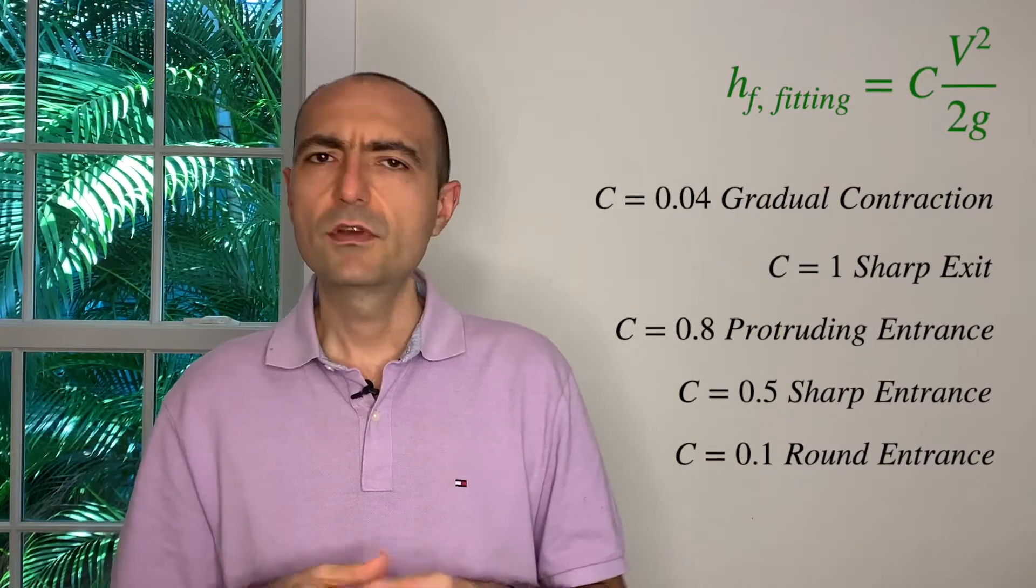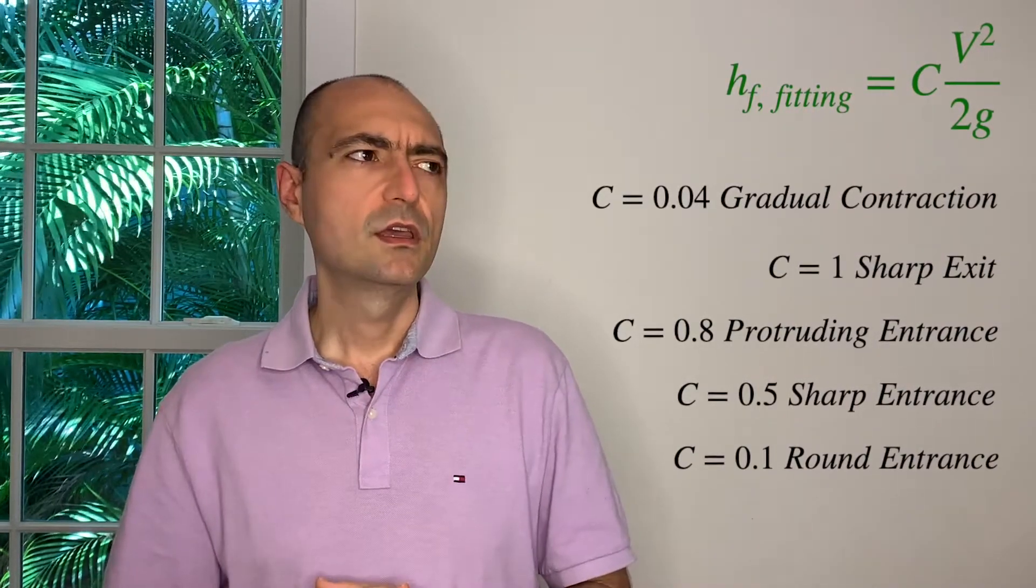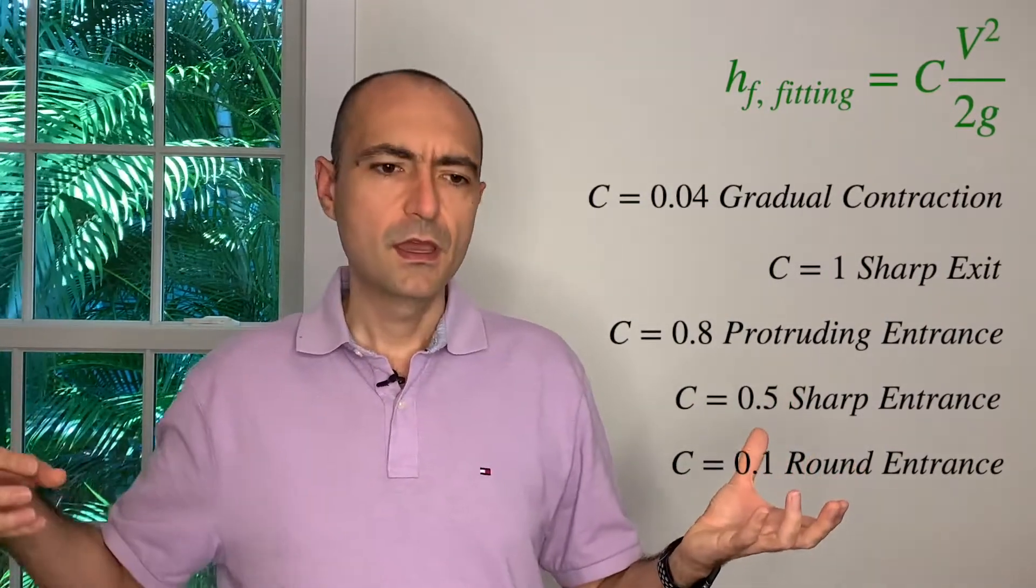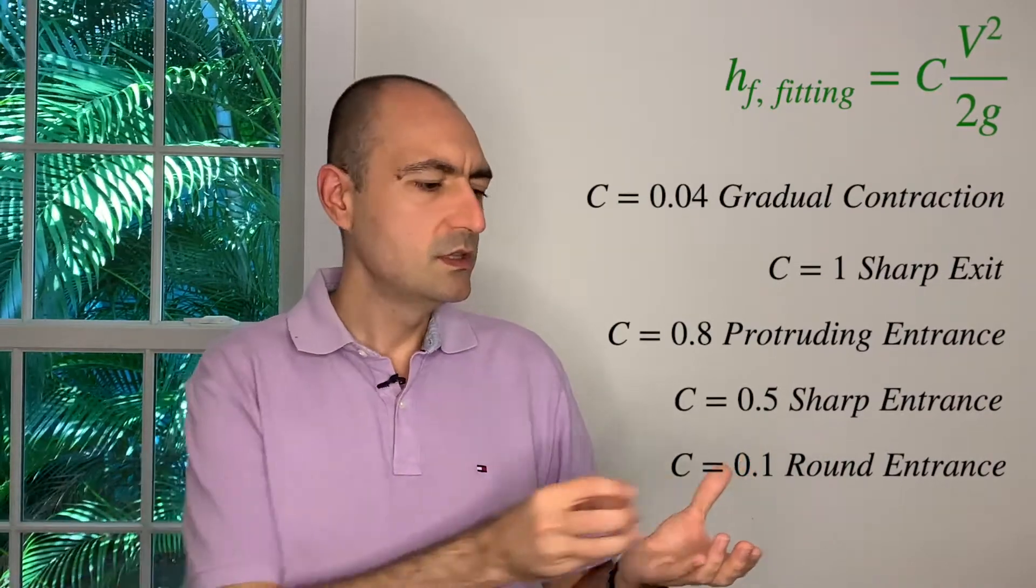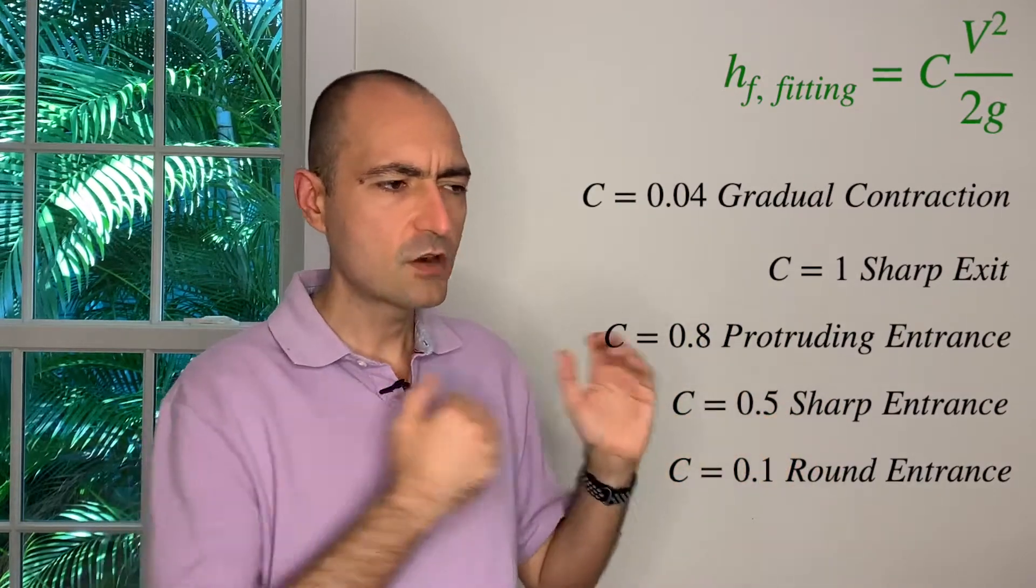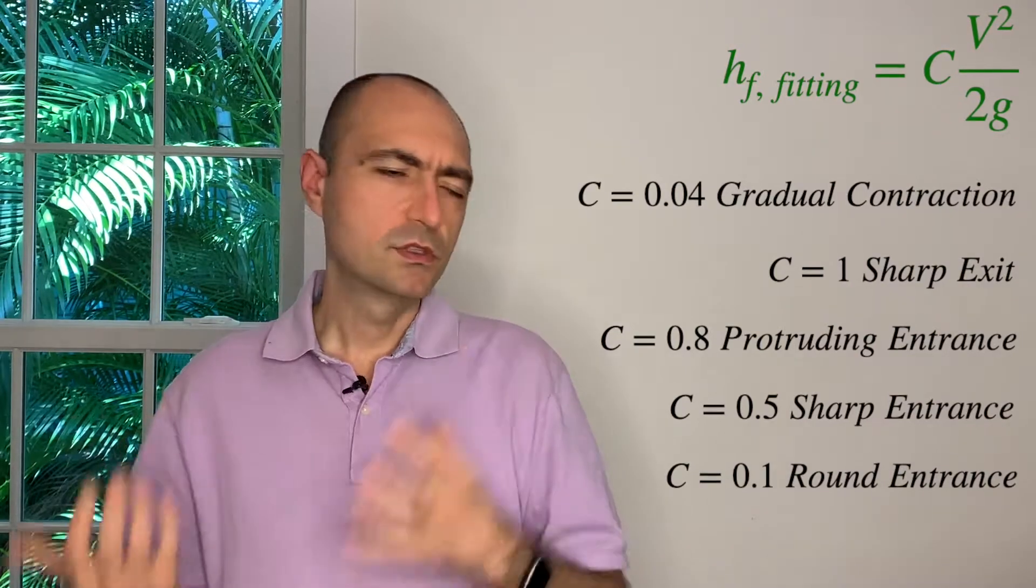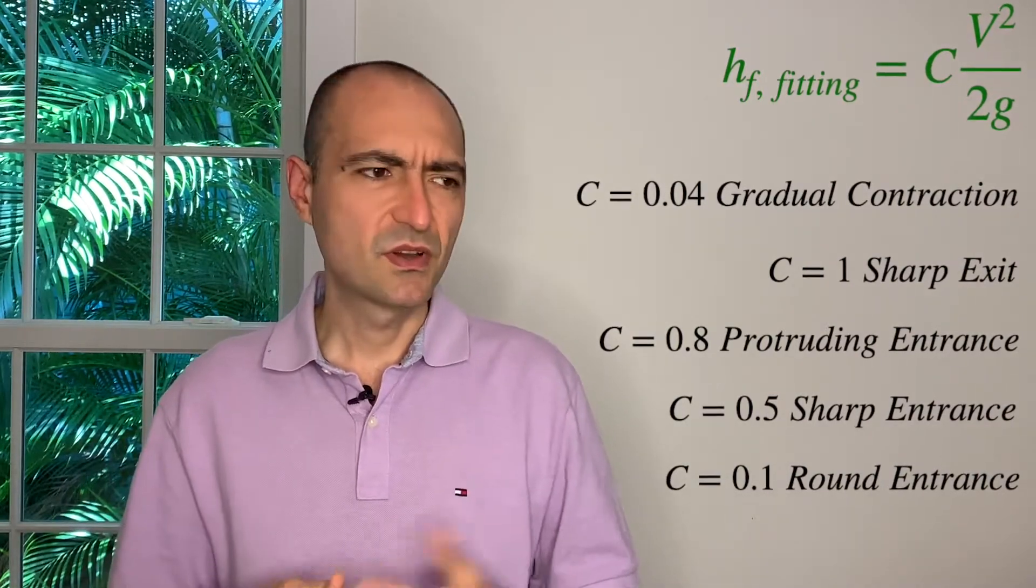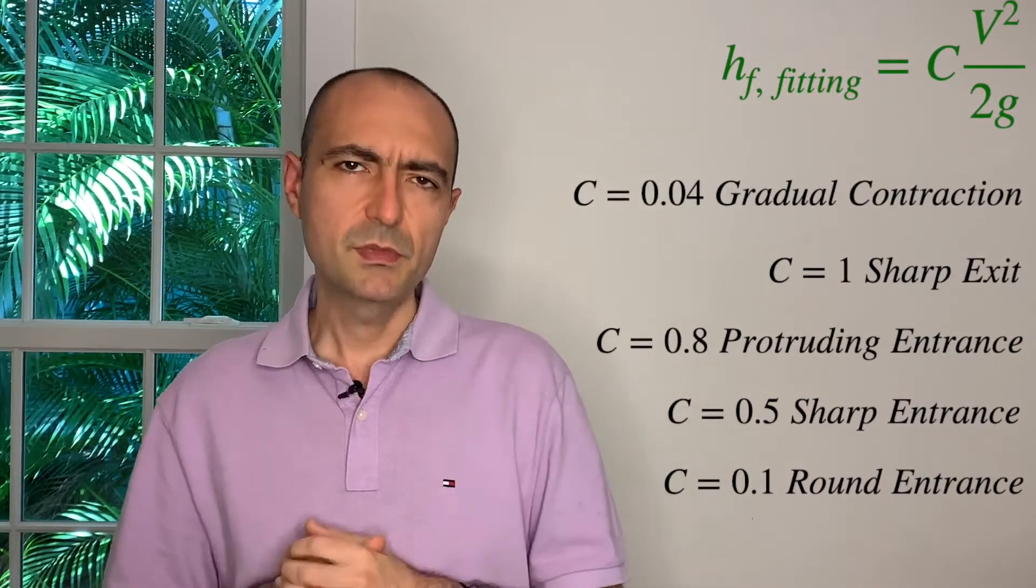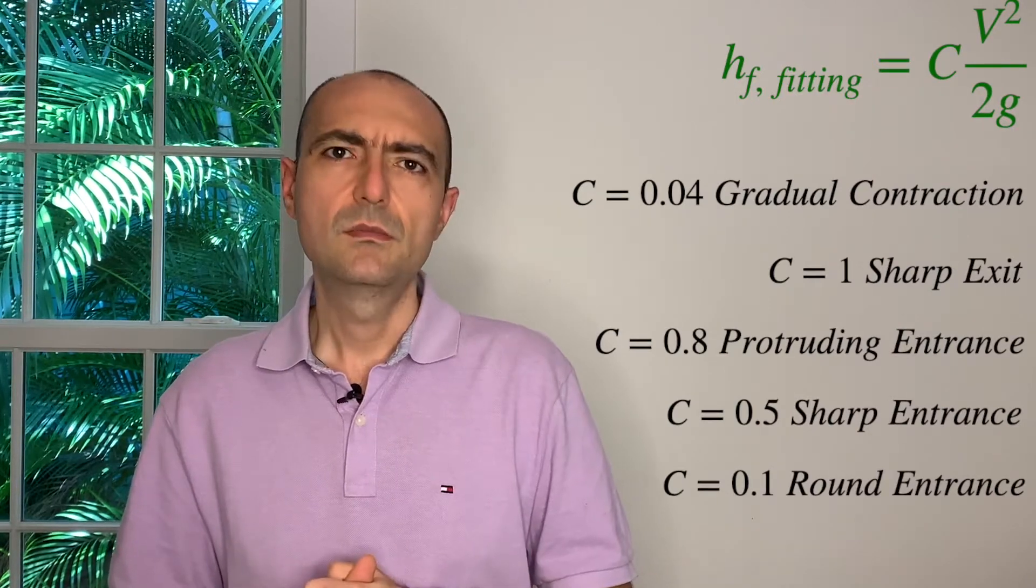And just very briefly, if I have a gradual contraction, it's going to be 0.04. If I have an inlet, let's say there's a tank and there's a pipe, and if this pipe is protruding into the tank, that will be 0.8. If I have a sharp entrance, it will be 0.5. If I have rounded, it equals 0.1, but it kind of changes as a function of the radius of curvature. And for each exit that I have, it's going to be 1. This information will be supplied to you, and it's given to you on page 183 of the reference manual.